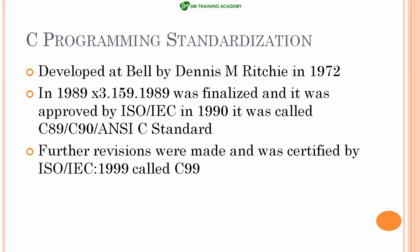The C program was developed at Bell Laboratories by Dennis M. Ritchie in the year 1972. And in 1989, the C programming standard got its first standardization by ISO and IEC in 1990. So it is called as C89 or C90, or the ANSI C standard.